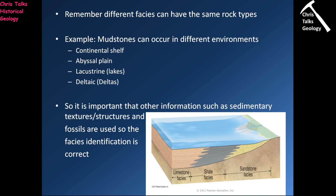We need to remember that different facies can have the same rock types. For example, mudstones can occur in a whole range of different environments — they can be part of the continental shelf sequence, part of the abyssal plain, deposited in lakes, or deposited by deltas. So just seeing a mudstone doesn't mean 100% that you're in a marine shale facies. You have to use other indicators, such as sedimentary structures and fossils, to definitively identify the environment.